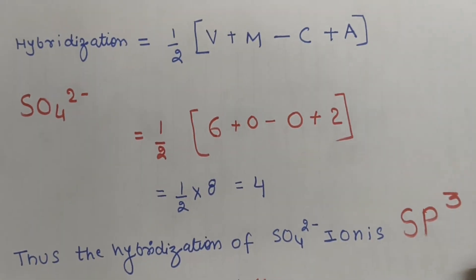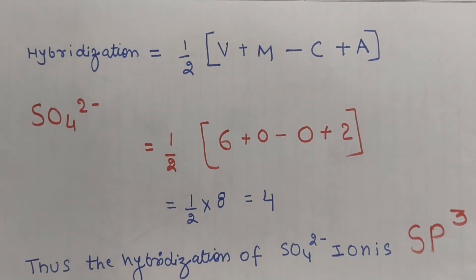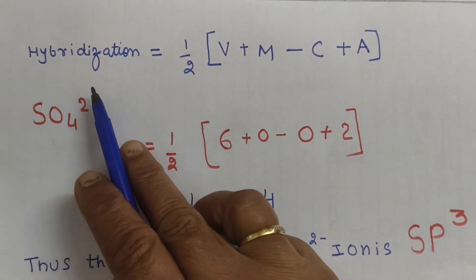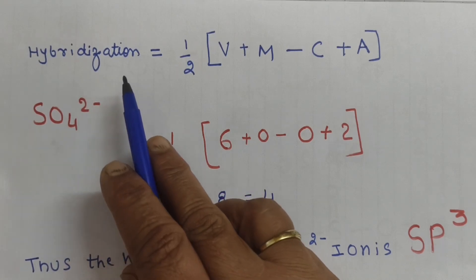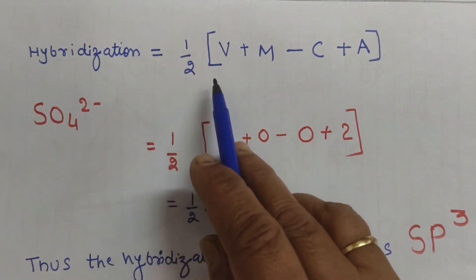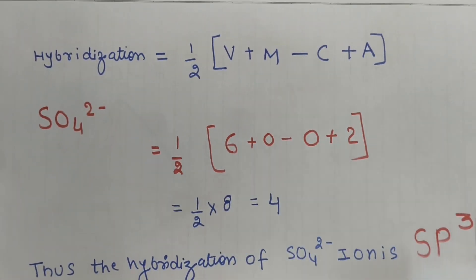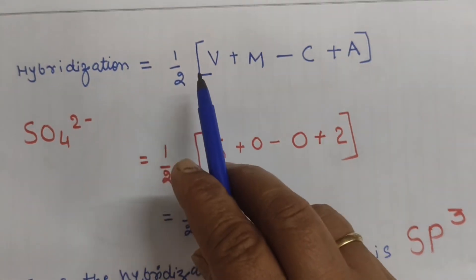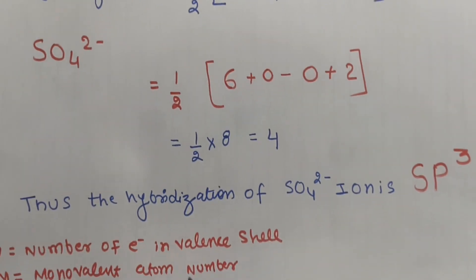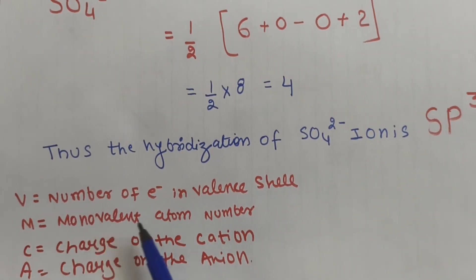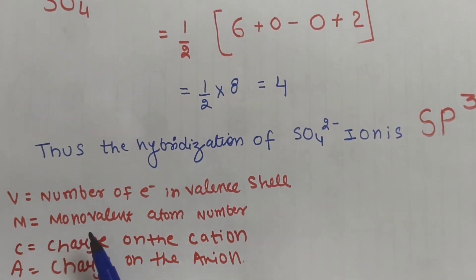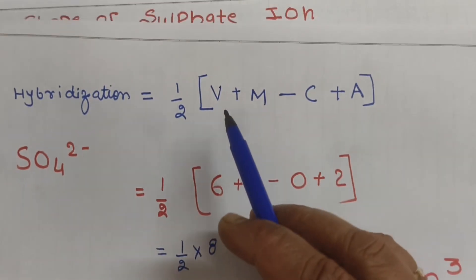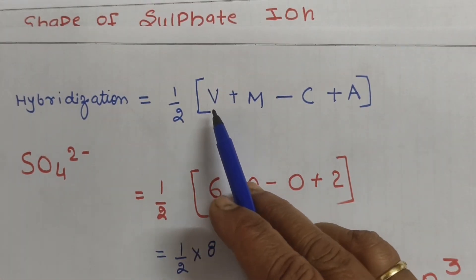To find the hybridization, we use the formula: H = ½(V + M - C + A), where V is the number of valence electrons, M is the number of monovalent atoms, C is the charge on the cation, and A is the charge on the anion.